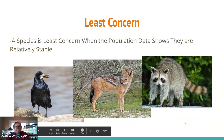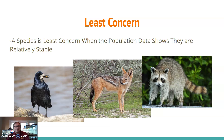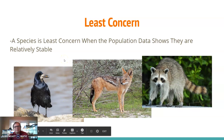Least concern is our next category. A species is least concern when population data shows they are relatively stable — animals we're probably used to bumping into all the time, whose numbers are strong enough that there's no risk of them going extinct. Examples include animals that benefit from living alongside people, like rooks, black-backed jackals, and raccoons, which coexist easily with humans.